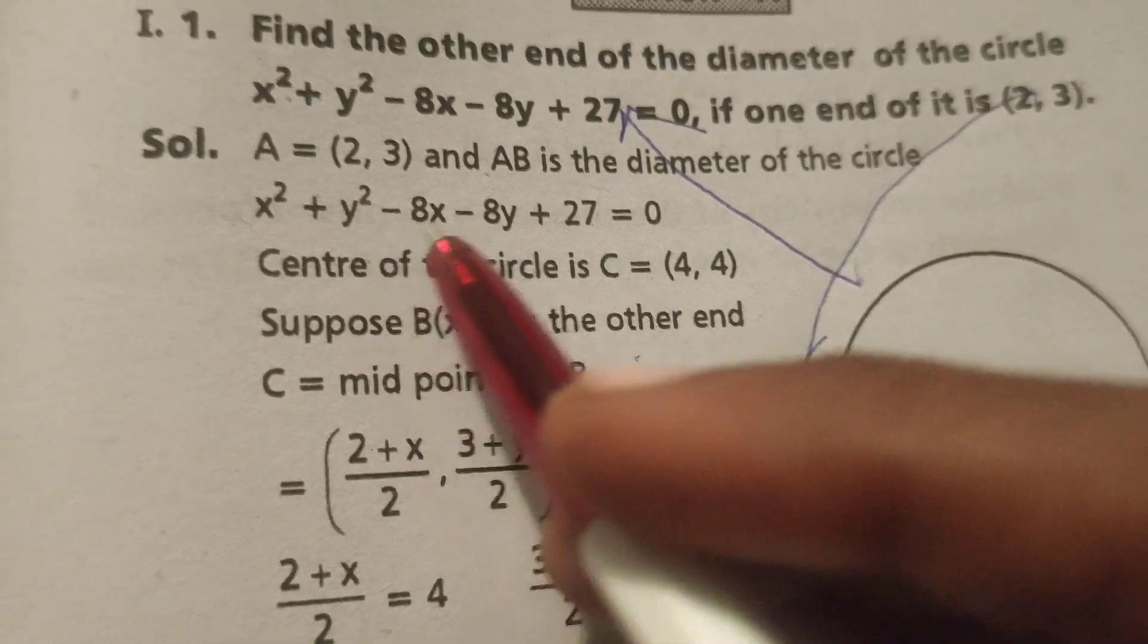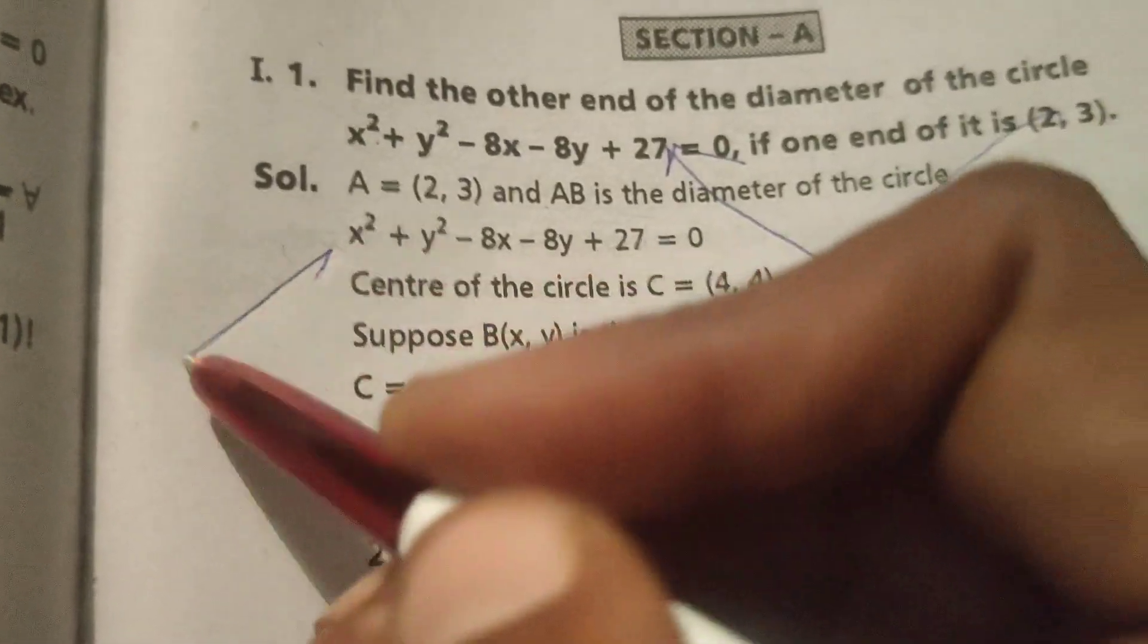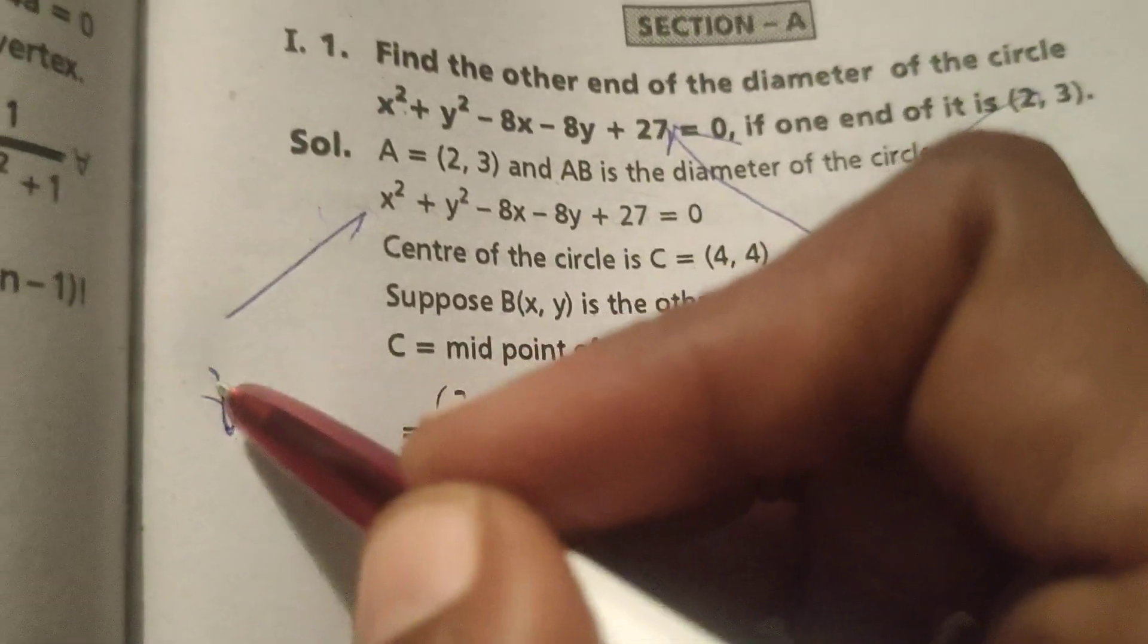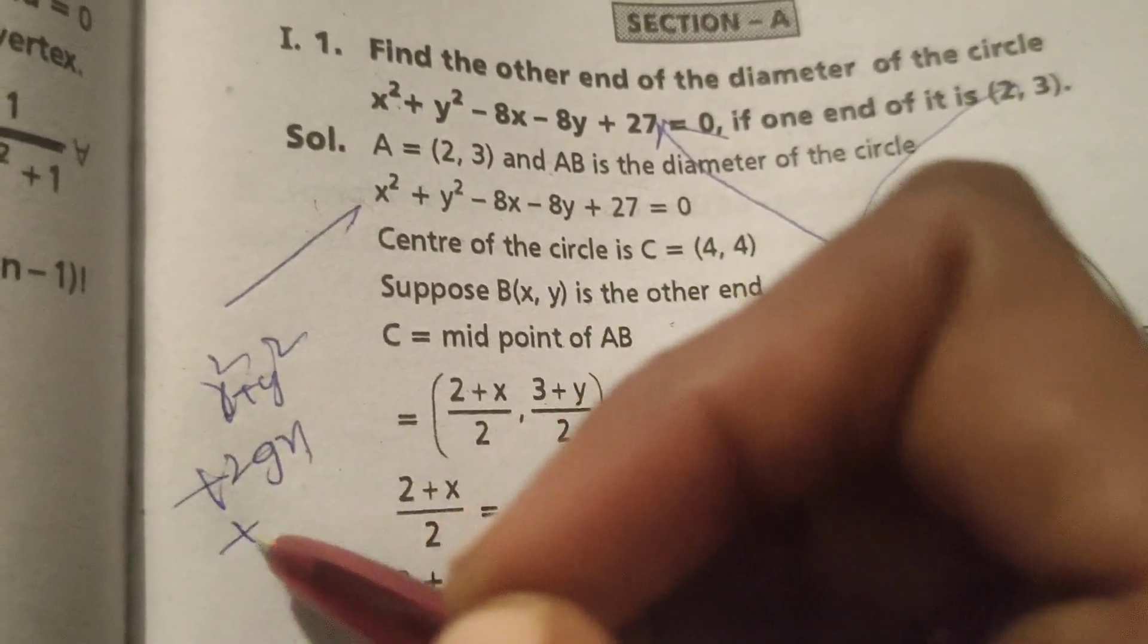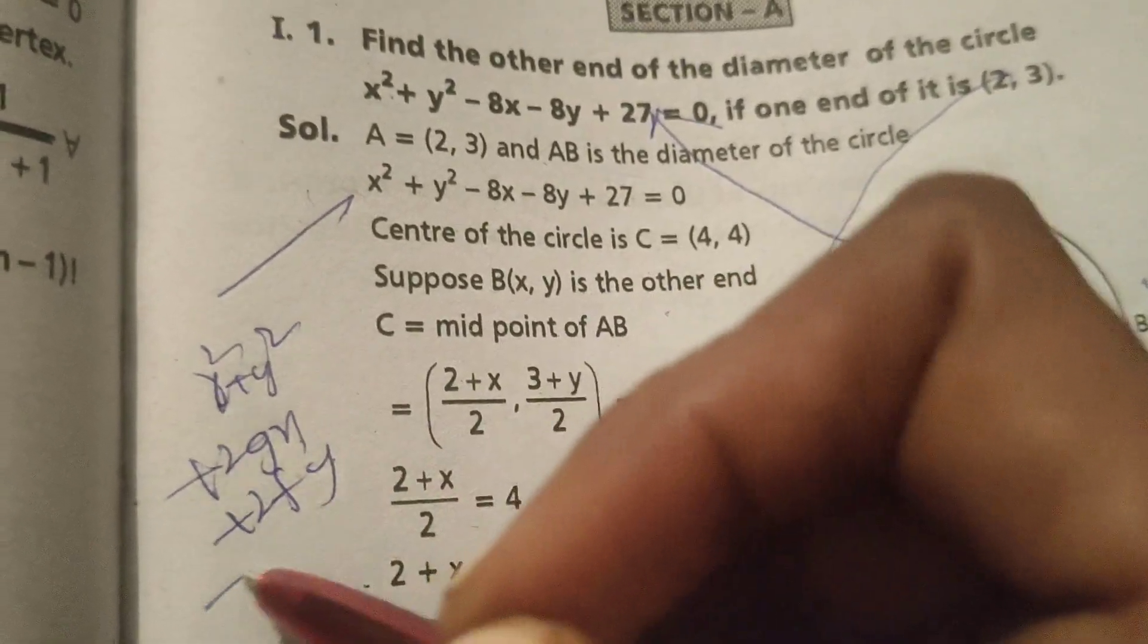Center of the circle: comparing with the standard circle equation x² + y² + 2gx + 2fy + c = 0.